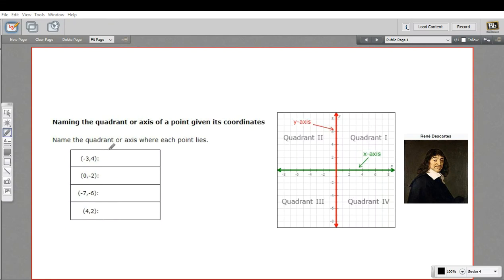In this problem, we're being asked to name the quadrant or the axis of a point just by looking at the coordinates. There are a couple of ways to go about this. We can just plot these points and then take a look where they are.